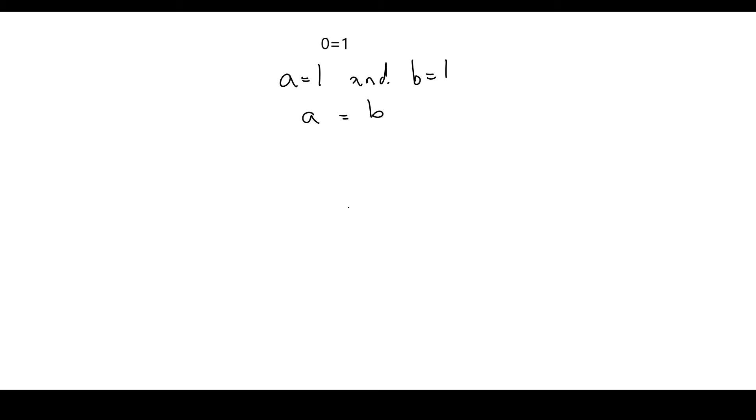I'm now going to multiply both sides by A. So that's going to give me A squared equals AB.